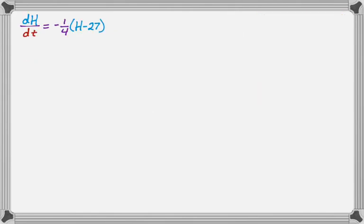Here is the first problem. We have dh/dt equal to negative one-fourth times the quantity h minus 27, and we also know that h of 0 is 91. This is motivated by the 2017 AP exam — I had a question that looked a lot like this; it actually was this, I think. But on the exam you didn't have to actually integrate it, and I don't know why, because you totally could have.